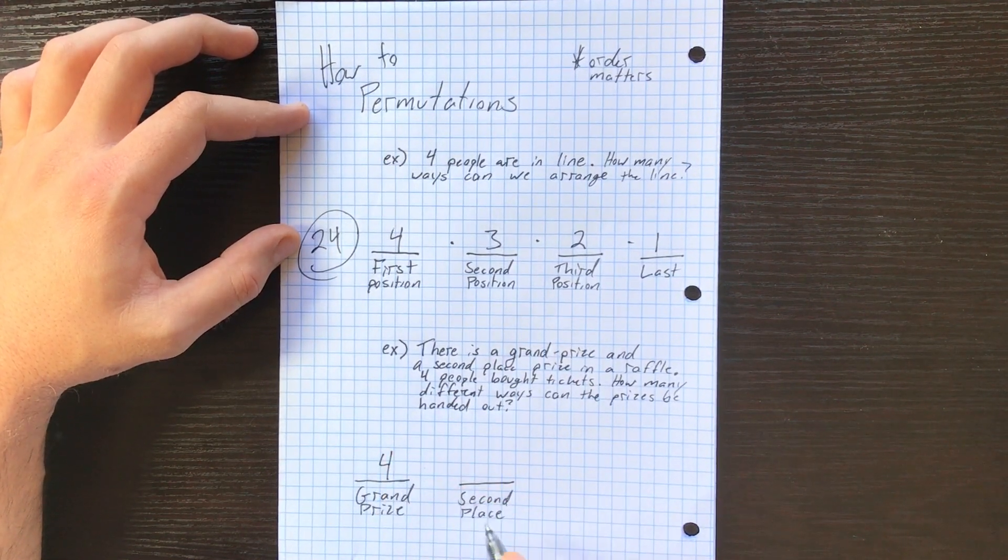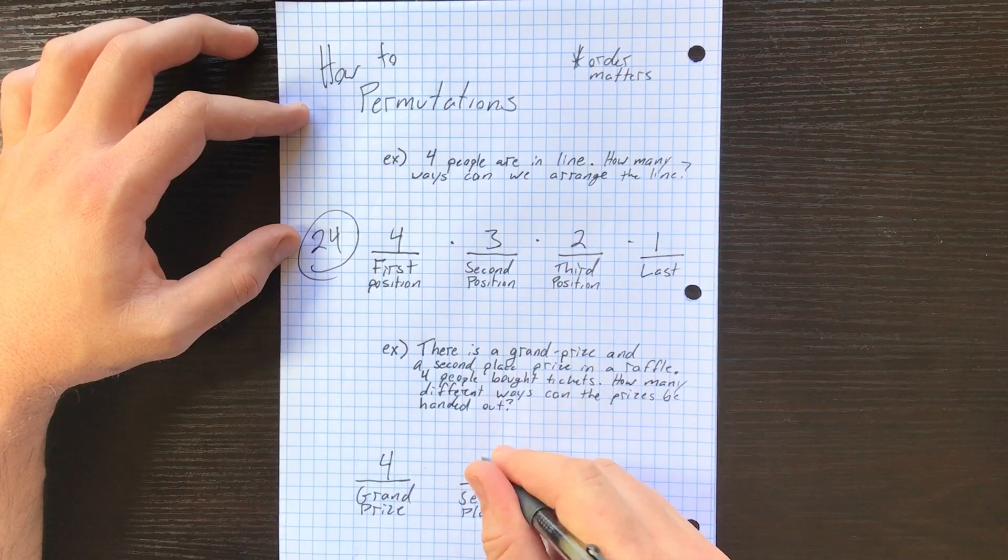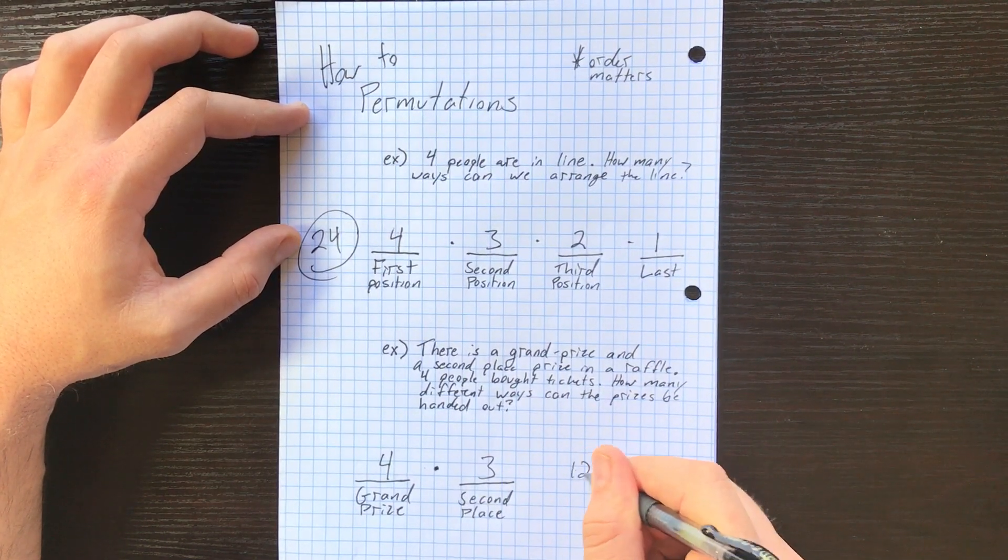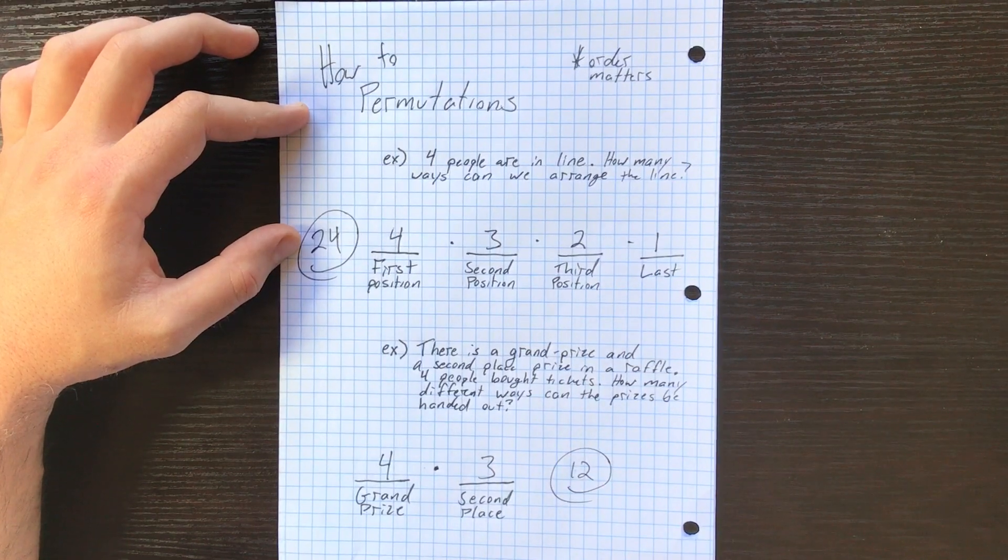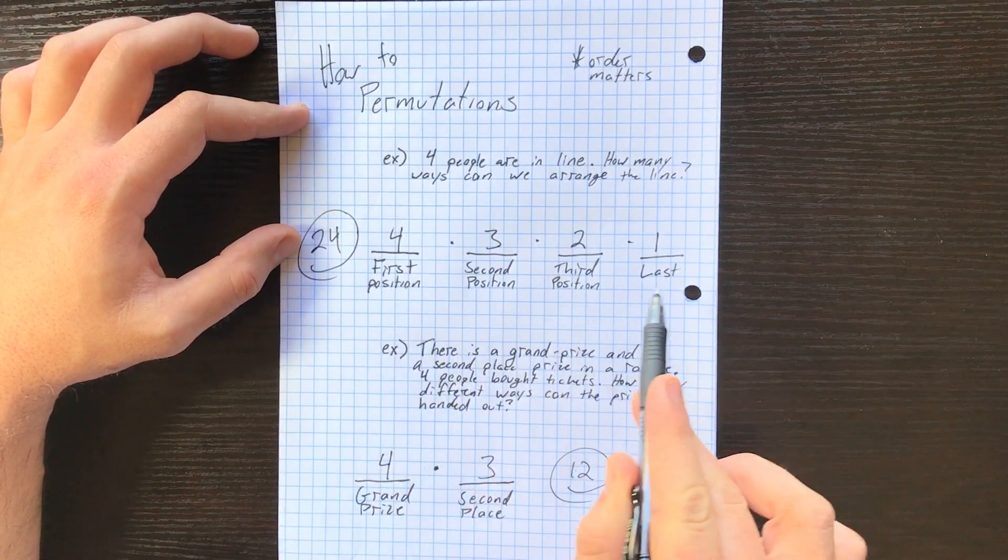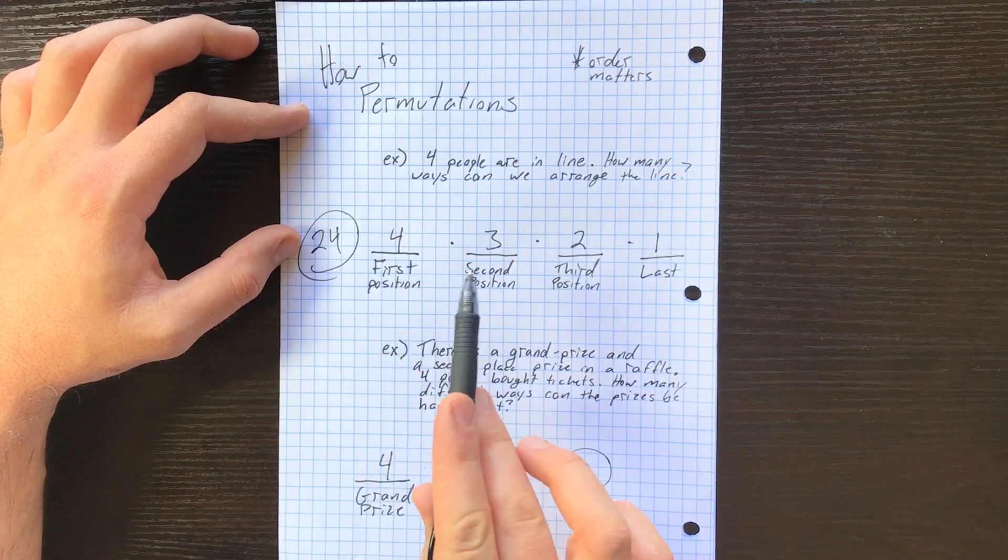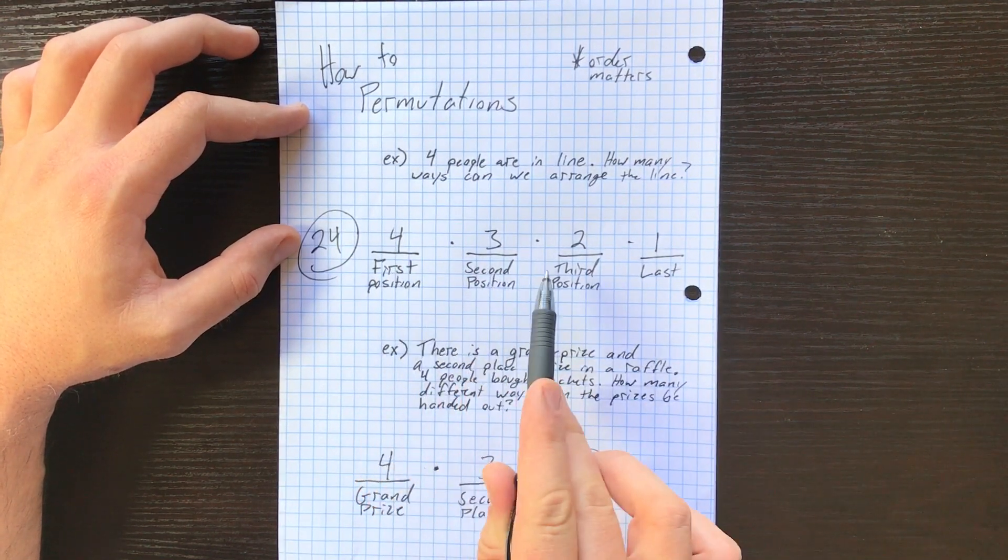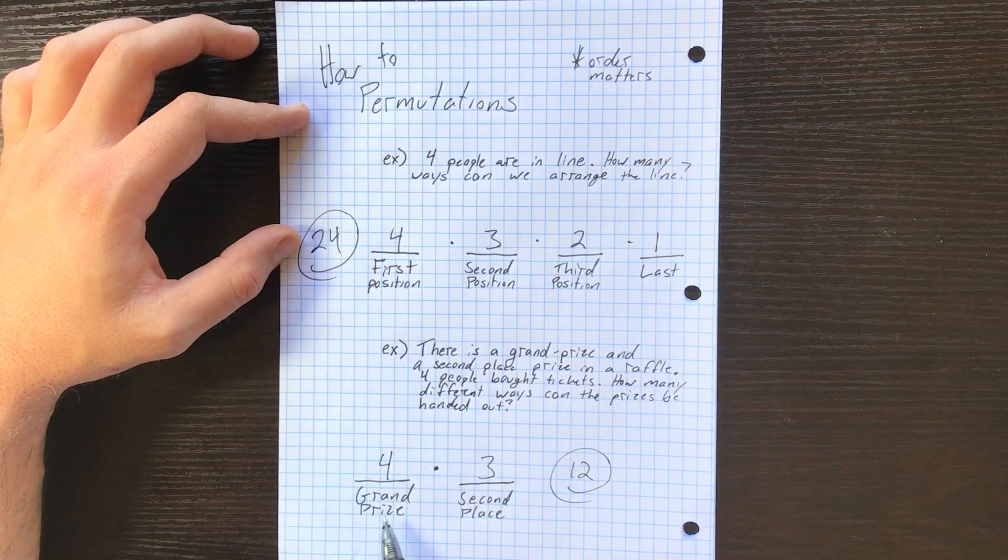Well, how many people are up for the grand prize? Four. How many people are up for the second prize? Three. We just multiply them together and we get our answer: 12. Okay, so we list how many positions we have.